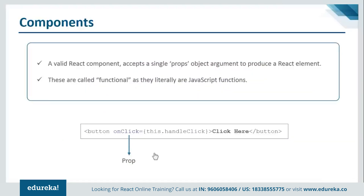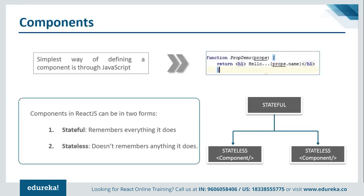A valid React component can always accept a single object argument and produce a React element. These are called functional elements as they are literally JavaScript functions. Here we are calling one handleClick function — whenever this function is called, it will always return one HTML representation. Additionally, we can define a component through a JavaScript function, like the 'propDemo' function, which accepts props and returns one HTML representation.